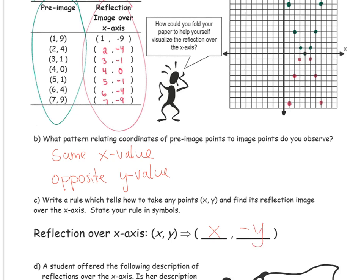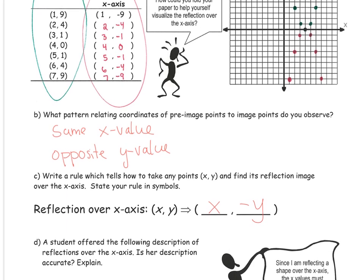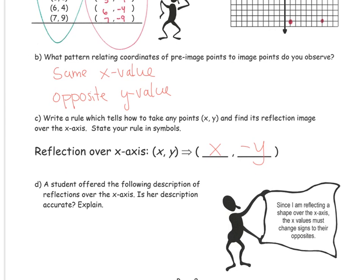Let's now look at this next part. A student offered the following description of reflections over the x-axis. Is her description accurate? Since I'm reflecting the shape over the x-axis, the x values must change signs. No, that's not true because we just saw the rule where the y value must take the opposite. The y value must be the opposite.